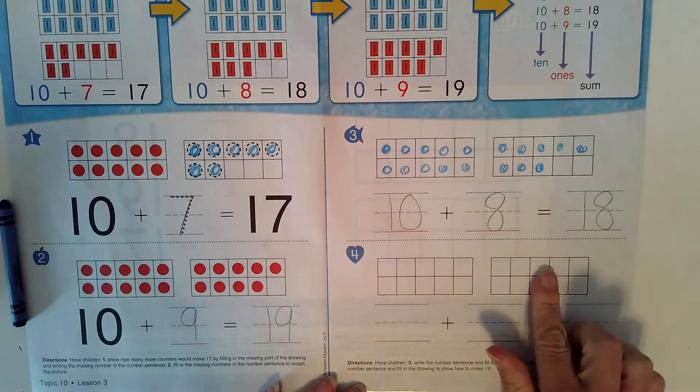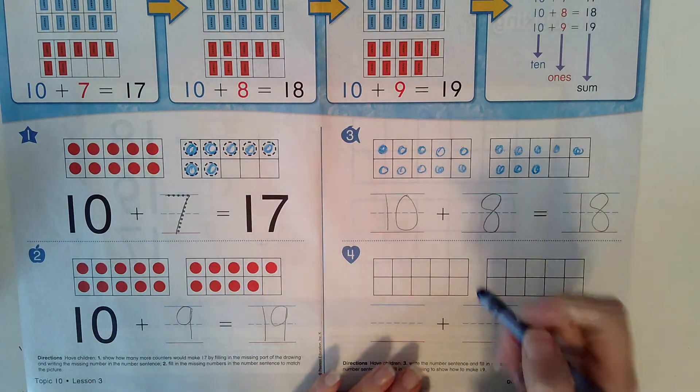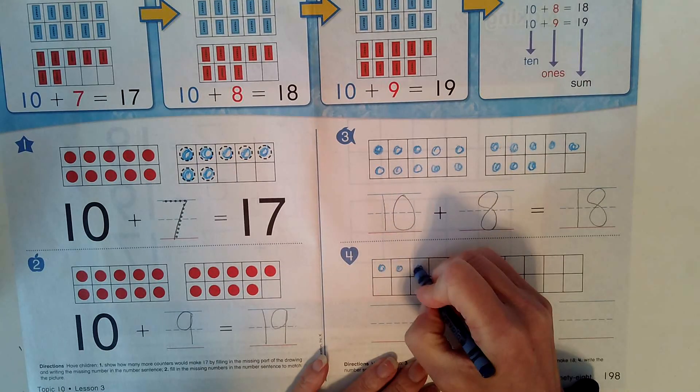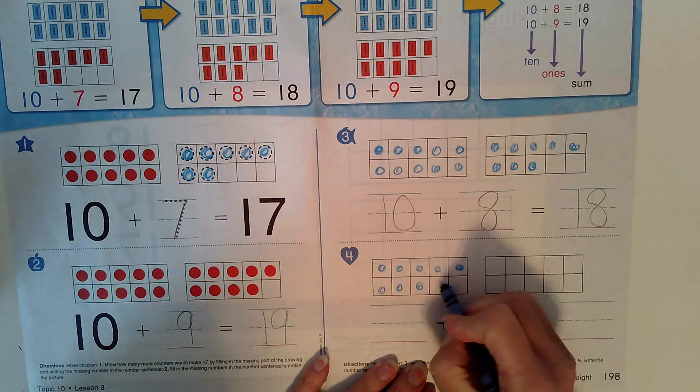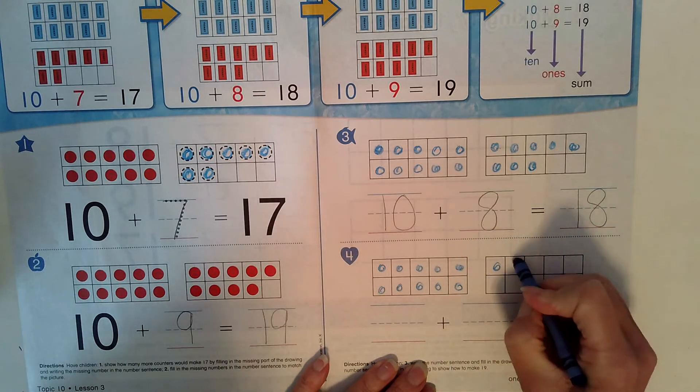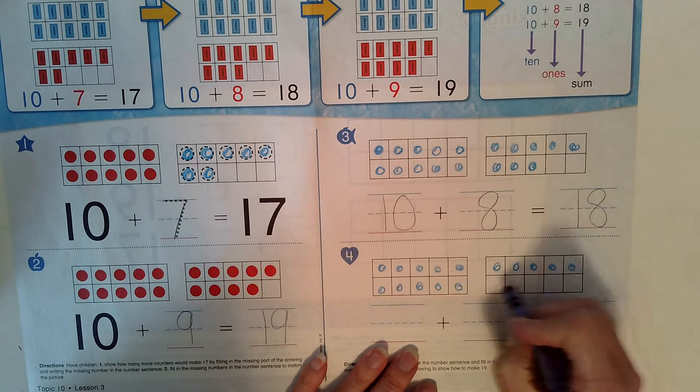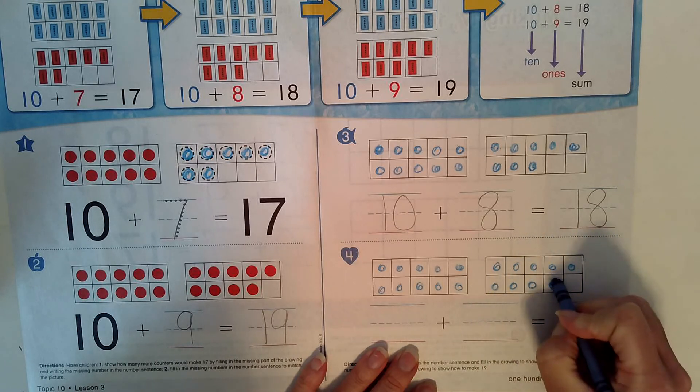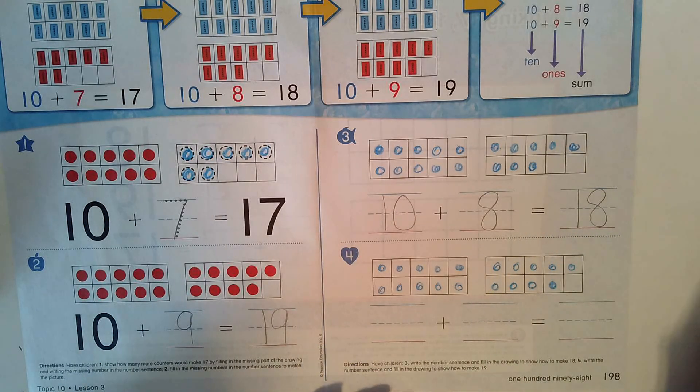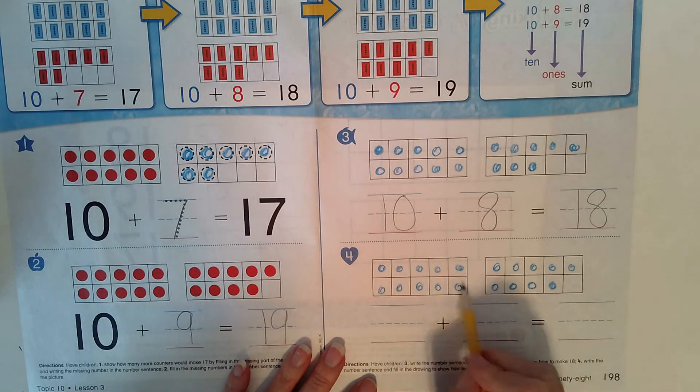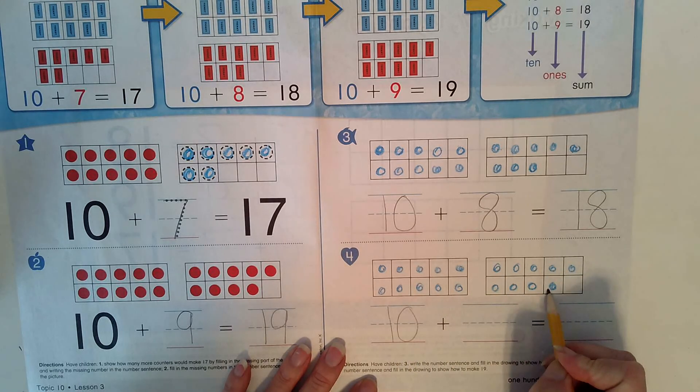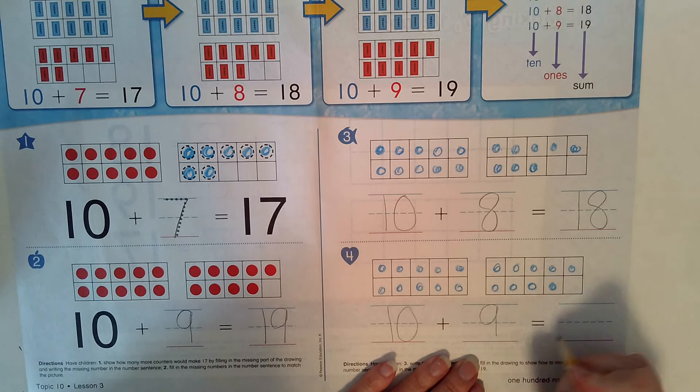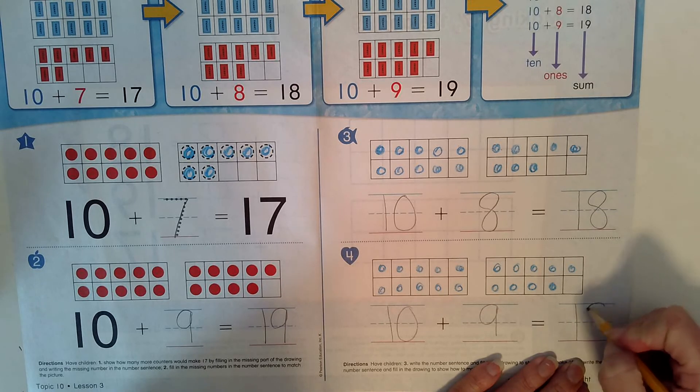On the last one here, we're going to make 19. Count with me. 1, 2, 3, 4, 5, 6, 7, 8, 9, 10, 11, 12, 13, 14, 15, 16, 17, 18, 19. 10 right here, plus how many? 9 equals 19. 10, 9.